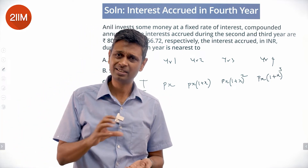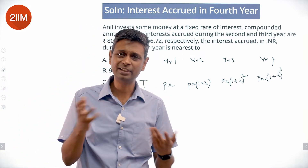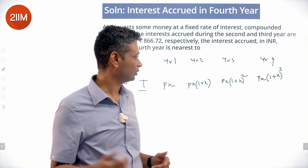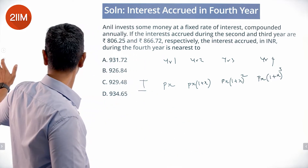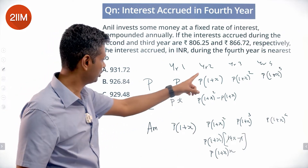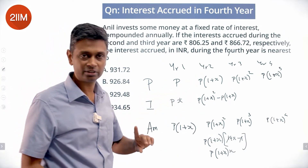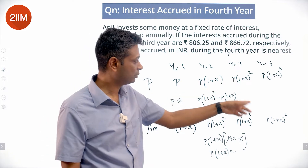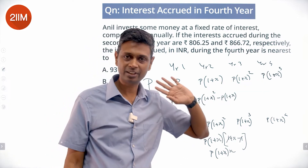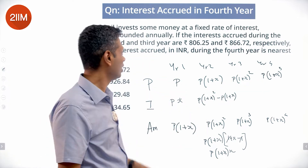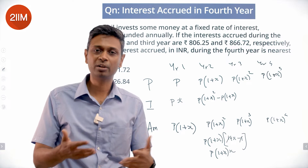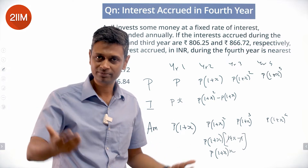Whatever the principal is, multiplied by x gives the interest. So this principal times x is this interest, and the next principal times x is the next interest. The interest itself forms a geometric progression.